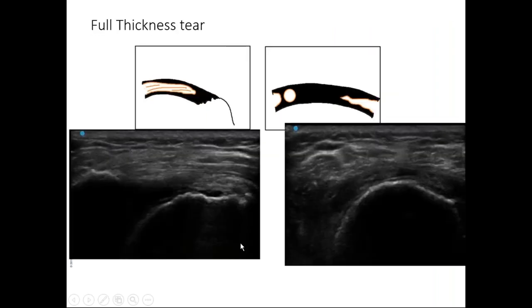For a full thickness tear, there is no tendon attached at the greater tubercle. The acromion and humeral head are visible but there is no supraspinatus. You can confirm this on short axis — you see only deltoid overlying the bone, with a small cartilage interface sign and some fluid collected. Roy has seen many great shoulder cases, particularly full thickness tears.